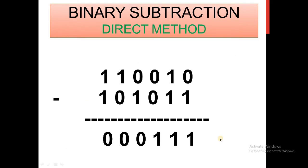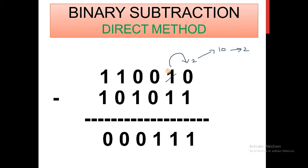Now let's see binary subtraction. There are two methods we can use: the direct method and the two's complement method. In the direct method, we consider whether one number is smaller or greater. If 1 is to be subtracted from 0, we have to borrow from the neighbor. When we take the value 1 from the neighbor, this position becomes 2 — which in binary is actually 10 — and from 2, subtracting 1 gives 1.